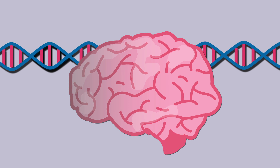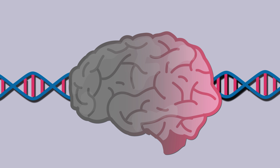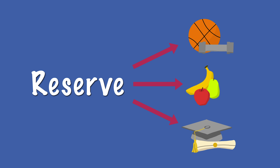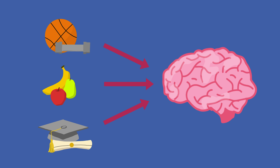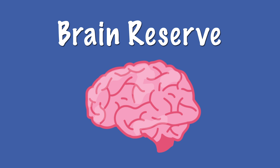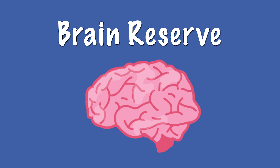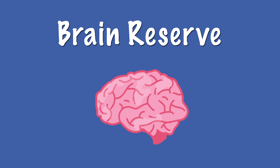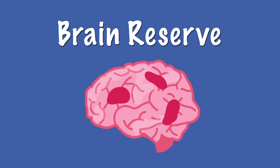Besides genetics, there are other factors that contribute to someone's susceptibility to Alzheimer's disease. There's a concept called reserve that relates life experiences like exercise, diet, and education with the prevalence of age-related brain changes and pathological changes, like those observed in dementia and Alzheimer's disease. There is brain reserve, which refers to the physiological characteristics of the brain — its size, and how many neurons and synapses are present — physical features that can affect pathology.